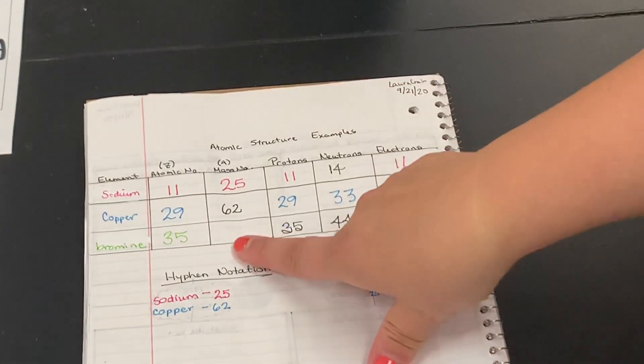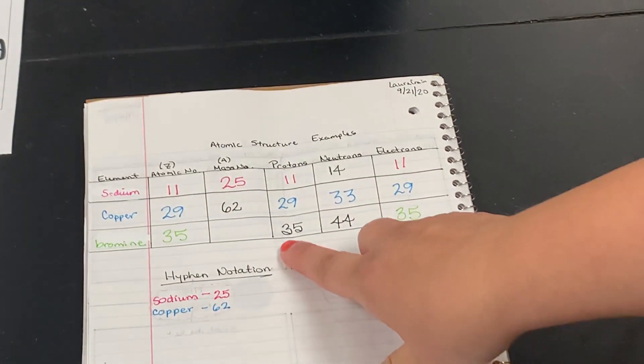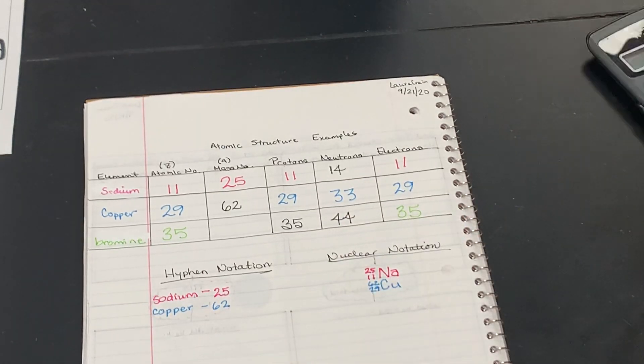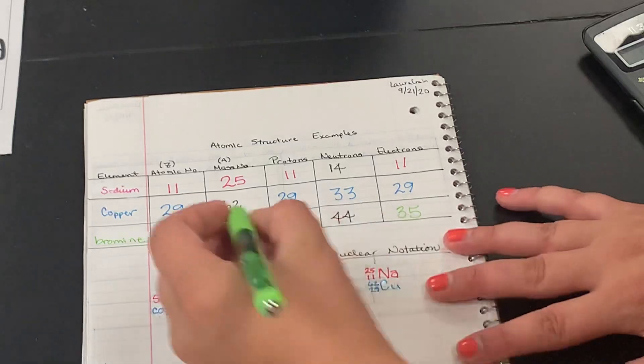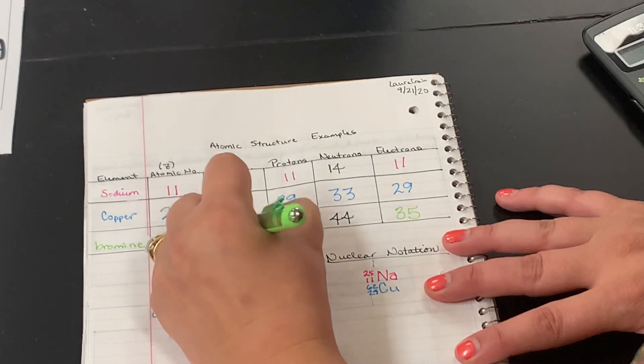So the last thing we need is our mass number, which remember is protons plus neutrons. So I'm going to do 35 plus 44, and that gets me a mass number of 79.